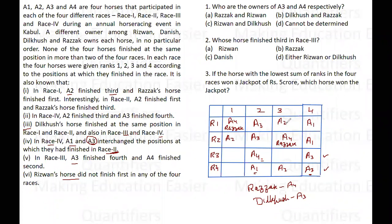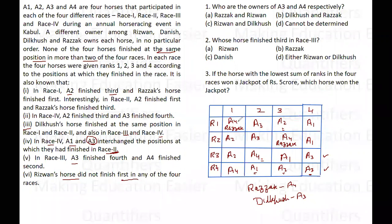In race 3, a2 was third in race 1 and race 4. Since none of the horses can finish in the same position more than twice, a2 has already been third twice — so a2 cannot be third again in race 3. Therefore, a2 should be placed in the first position in race 3, and a1 should be in the third position. A4 is second in race 3, and it is given that Rizwan's horse did not finish first in any of the four races.